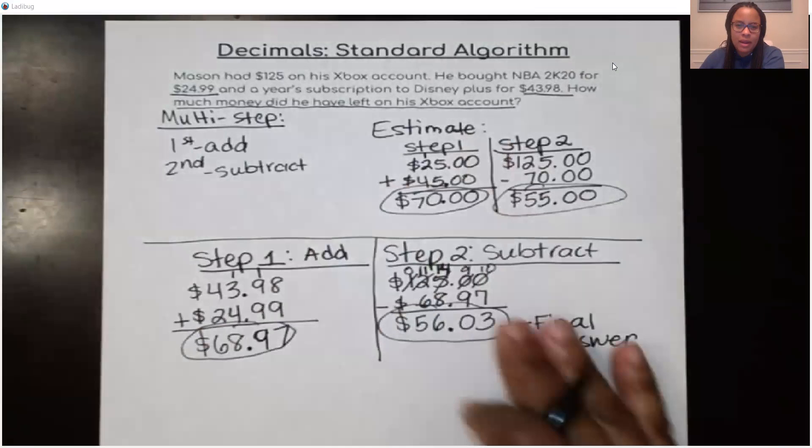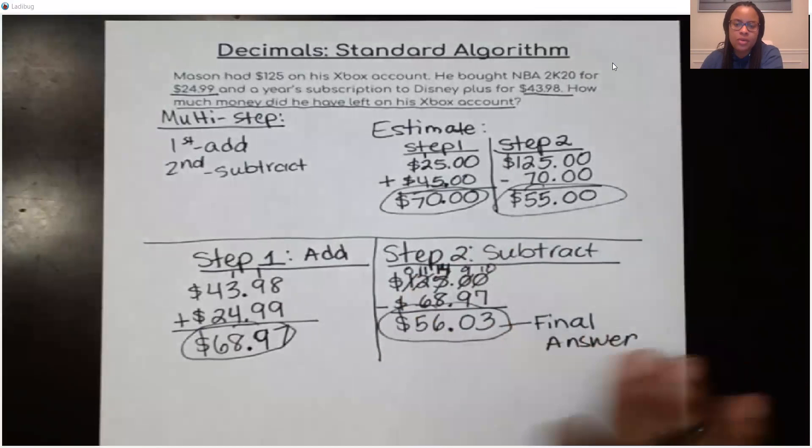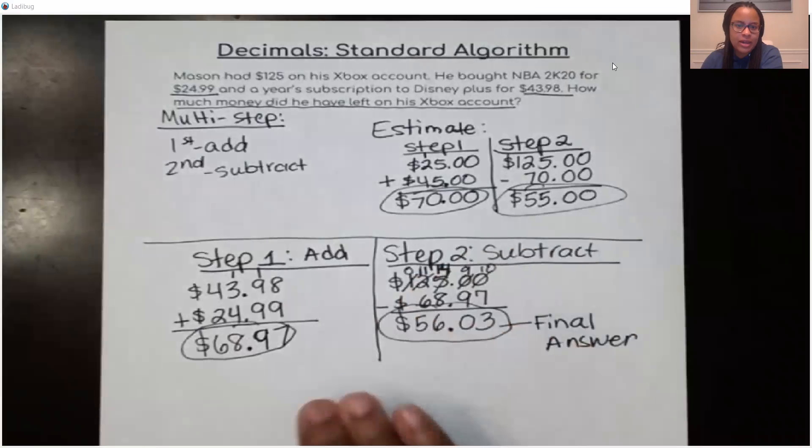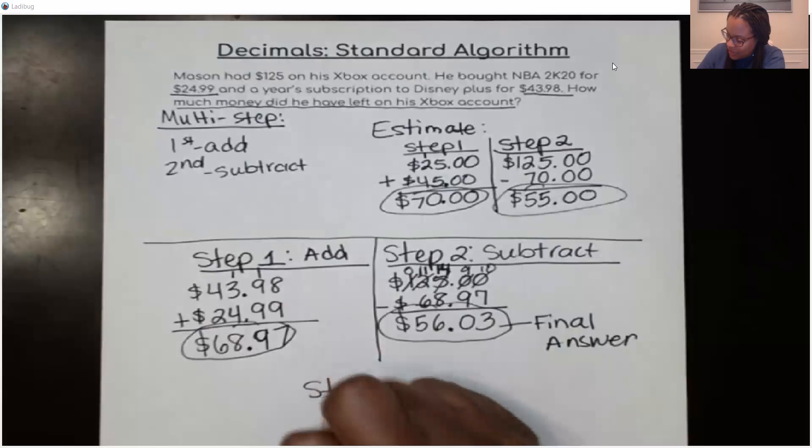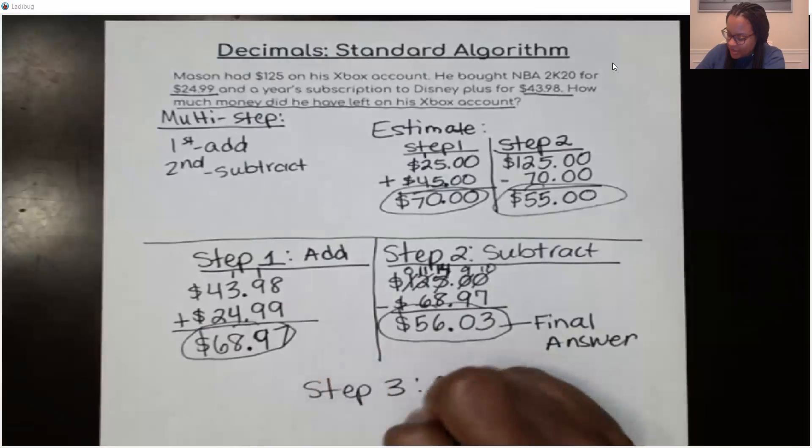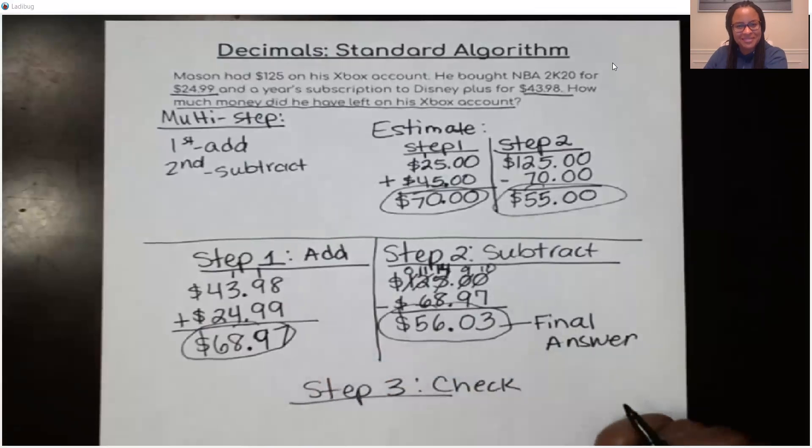But this was only one problem. So this is not going to hurt me at all to go ahead and check. I need to check over my work. I'm going to do one more step just to make sure I know I got this right. So I'm going to go to step 3. And that is to check. A wise child checks over their work.